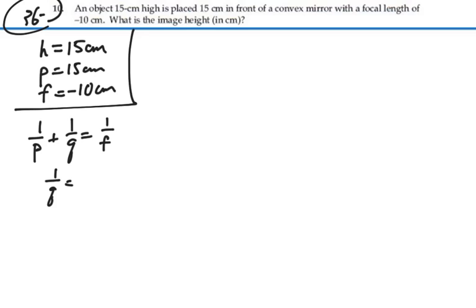1 over q will equal 1 over f, which is minus 10, and then minus 1 over p, which would be 1 over 15. That's going to be negative 3 thirtieths, minus 2 thirtieths, or negative 5 thirtieths.